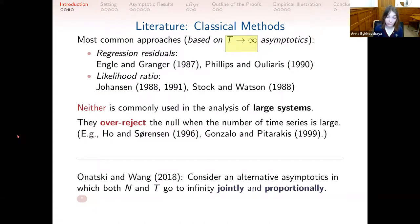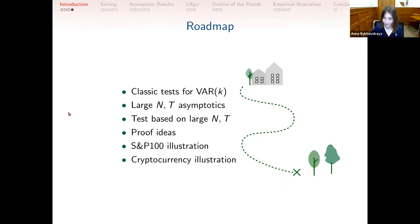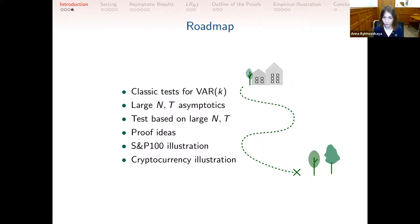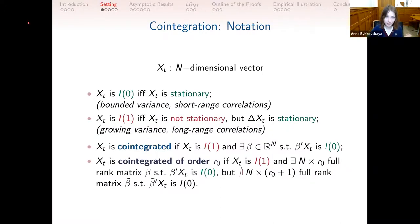We will see in more detail what happens in the large-T, large-n world with the traditional cointegration tests, focusing on the likelihood ratio. Then I will explain how to correct the procedure for the actual large-dimensional setting. If time permits, I will discuss the ideas behind the theorems, and at the end I will show two empirical illustrations: one on the S&P 100 and another on cryptocurrency.